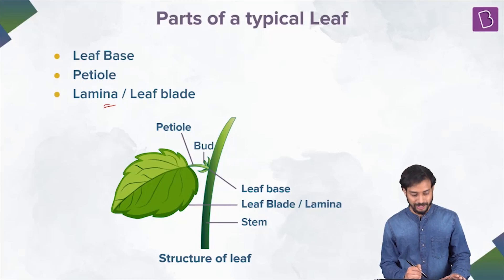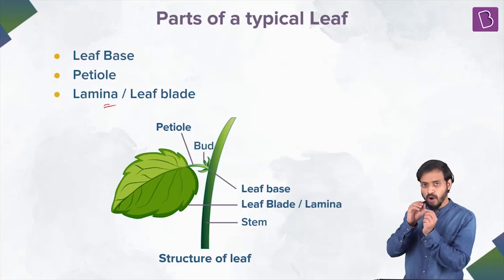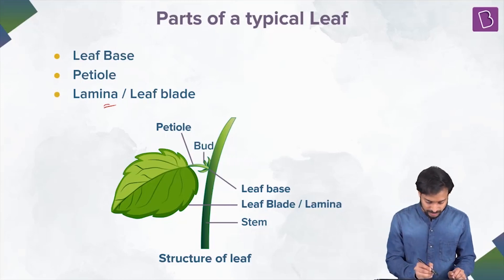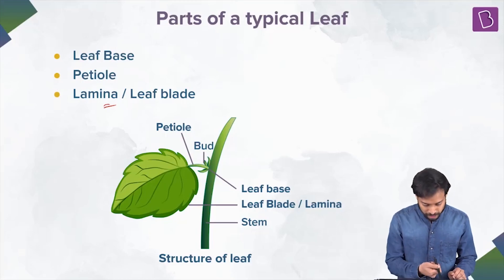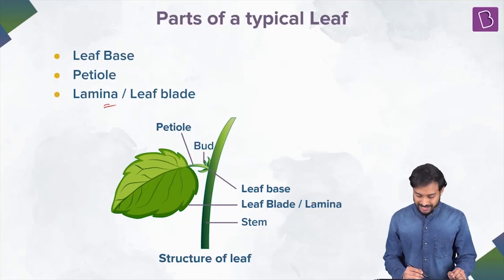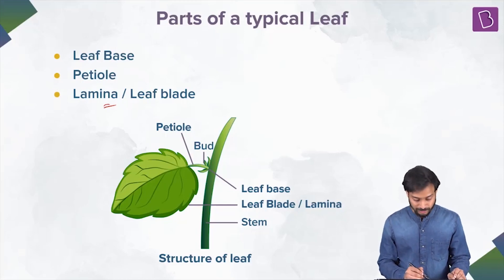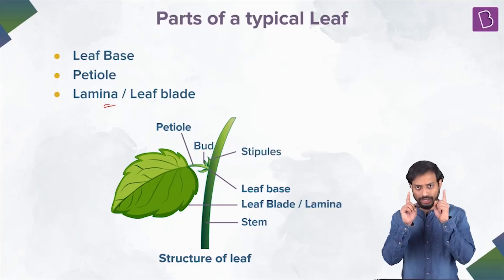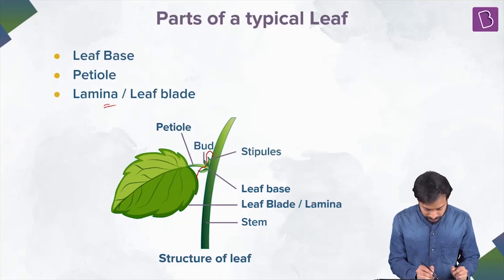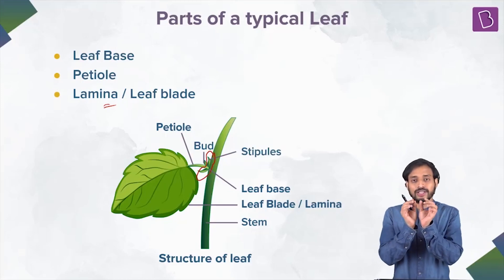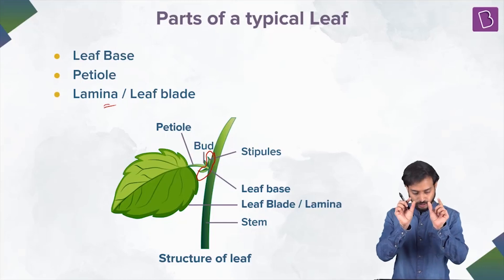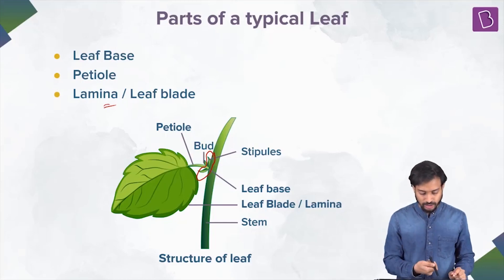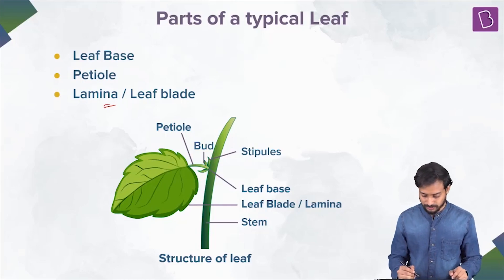This is the bud. Can you see the bud? Take a close look — a small structure there. I'll point it out and then rub it off. Can you see the bud over here? So that is the bud. Now I'm going to show you some other structures. These are called the stipules — take a close look. Can you see two small leaf-like structures? These are known as the stipules. These are born laterally.